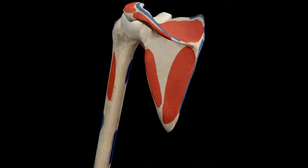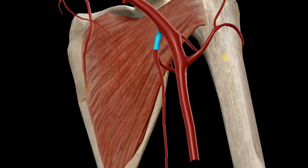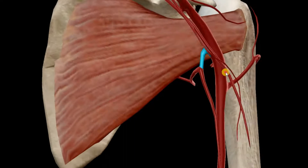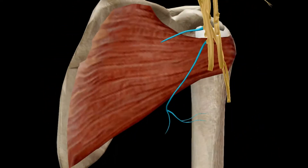Now going a little deeper so you can see everything clearly — the blood supply is from the subscapular artery. The innervation is from the upper subscapular nerve, C5 and C6.